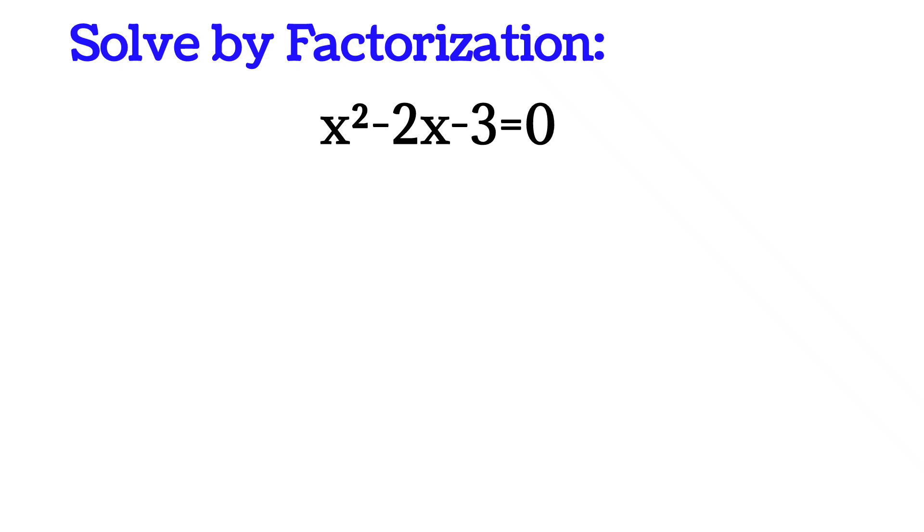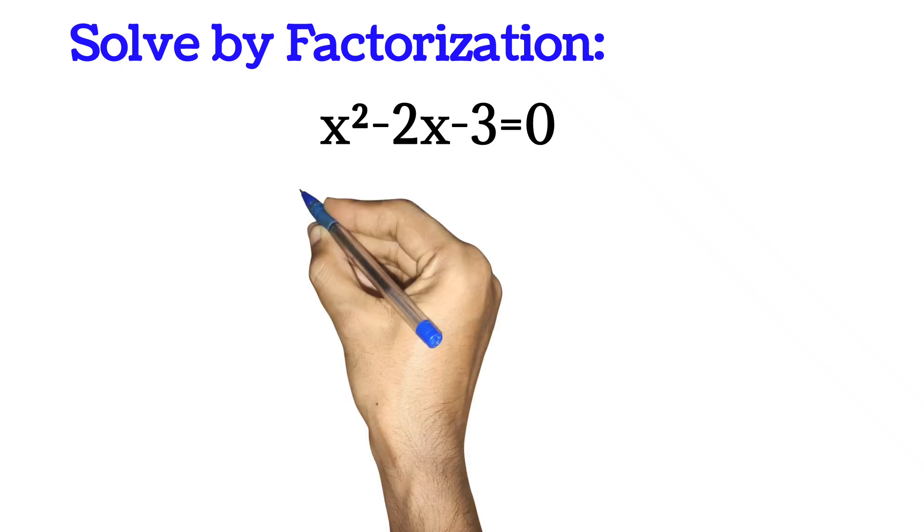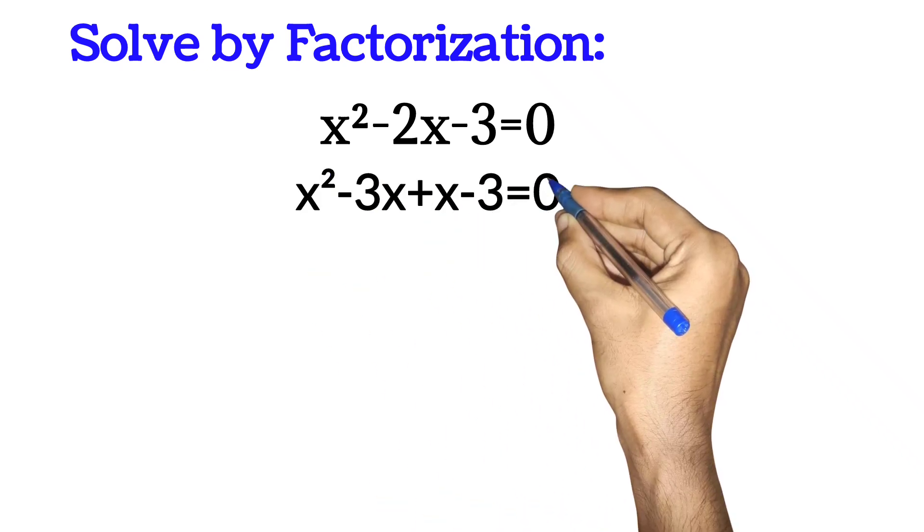Watch this video till the end. First, look for two numbers such that when you multiply you have -3, when you add you have -2. Feel free to pause this video and look for those two numbers. Okay, the two numbers are -3 and 1.